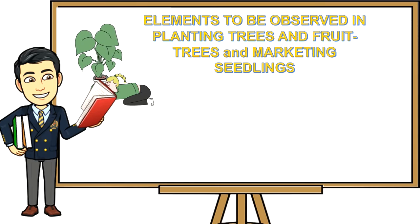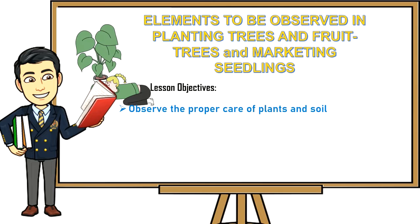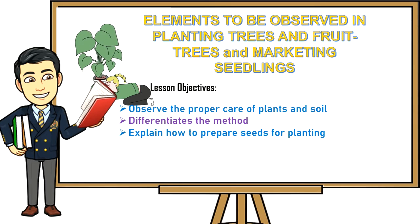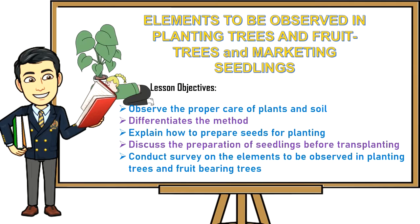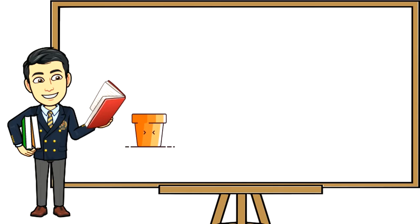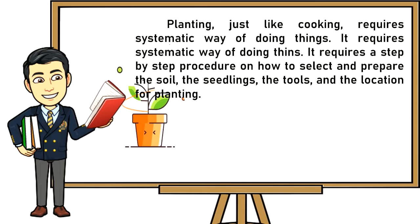Lesson objectives: observe the proper care of plants and soil, differentiate the methods, explain how to prepare seeds for planting, discuss the preparation of seedlings before transplanting, and conduct a survey on the elements to be observed in planting trees and fruit-bearing trees.